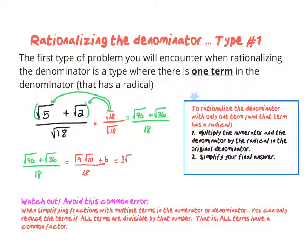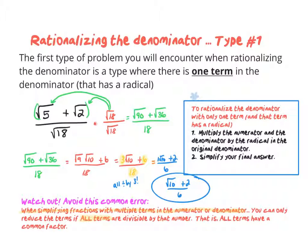That answer isn't quite simplified yet. When we simplify fractions that have multiple terms in the numerator or denominator, we can only reduce the terms if all of them are divisible by a certain number. Looking at my problem, I see coefficients 3, 6, and 18 — and they're all divisible by 3. So I reduce all of them by a factor of 3, giving me root 10 plus 2 over 6.